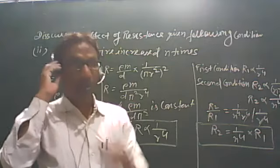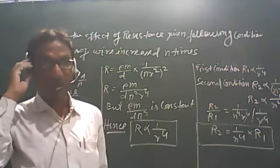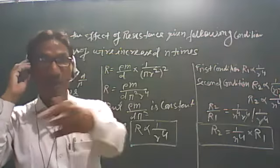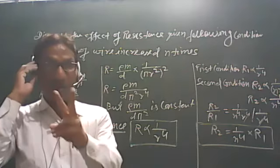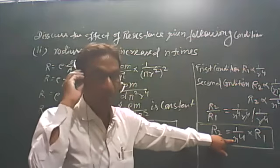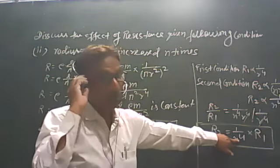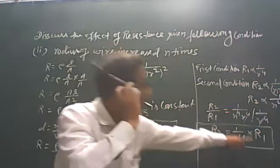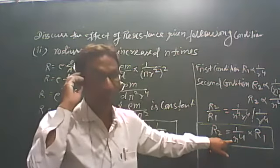Let's see with an example. If the radius of your wire is 1 cm, and we double it to 2 cm, the radius is increased 2 times. So we use n equal to 2, and the new resistance is 1 upon 2 to the power 4, which is 1 upon 16 times the original resistance.